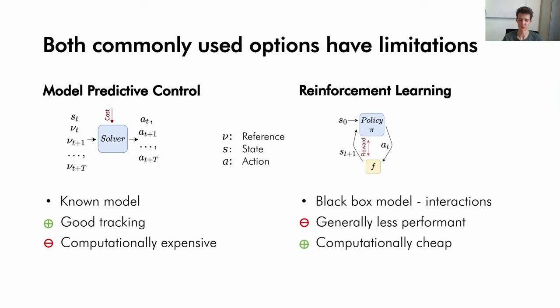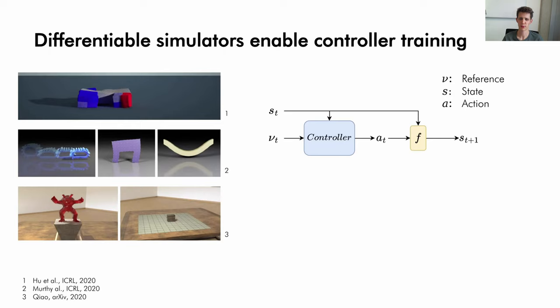So we wonder, can we combine these two benefits? Can we use prior knowledge of the system to train a control policy to enable us to get performant control with low computation cost at execution time? An approach to train a policy while exploiting prior knowledge comes from differentiable simulators.